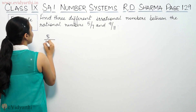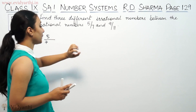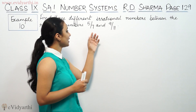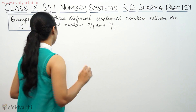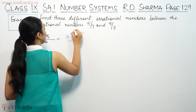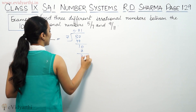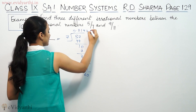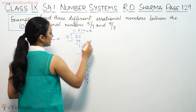So for 5 by 7, we need to convert it to a decimal. We divide 5 by 7. 7 into 49 — 0.77 is 49. 7 into 1 is 7. 7 into 4 is 28. 7 into 2 is 14. 7 into 8 is 56. If we divide it, we get 0.71428.